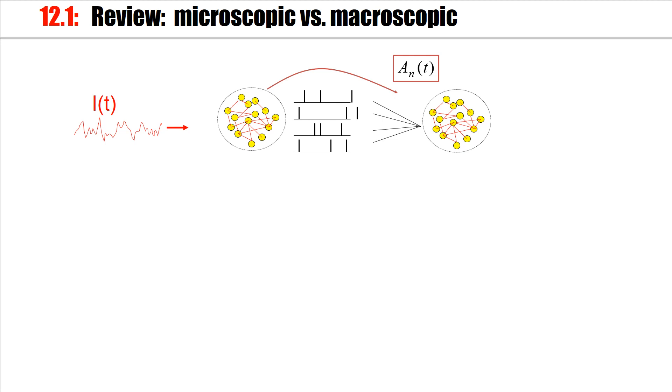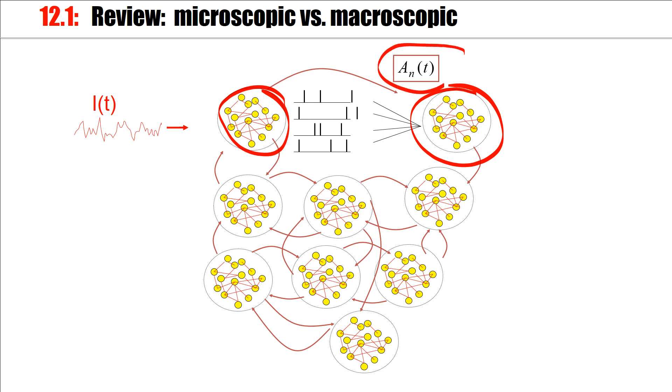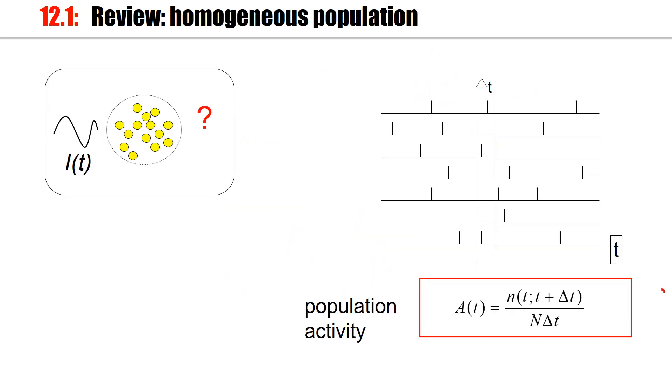Now, for the Fokker-Planck equation, we'll take the point of view of populations of neurons that talk to each other by spikes. And the quantity we are interested in is the population activity, the average of the momentary spikes across the full population. So one population sends spikes to another one, which sends spikes to yet another one, and so forth. And moreover, there will be feedback within each population.